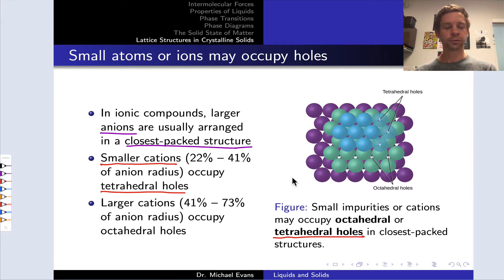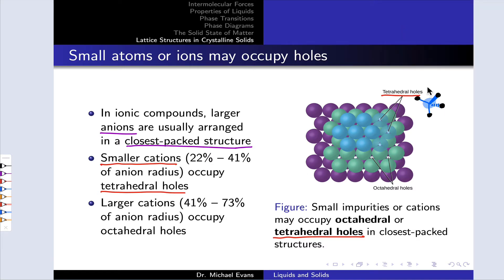Tetrahedral holes are called as much because around the empty space of the hole, which I've highlighted here in blue, the adjacent atoms take the appearance of a tetrahedron. You can see that here with one atom sitting on top and a triangle of atoms sitting below the hole. This resembles a tetrahedron. That's why the empty space is called a tetrahedral hole.